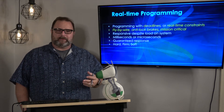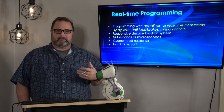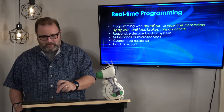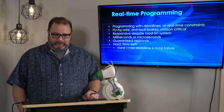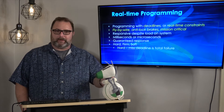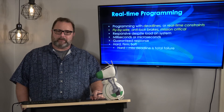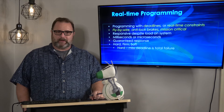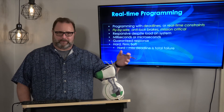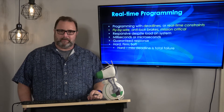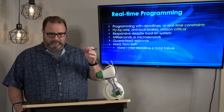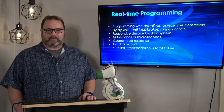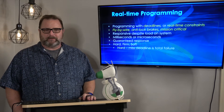There are three categories of what a real-time system can require. A hard system means if you miss a deadline it's total failure — an airplane system, a missile defense system, a safety-of-life system. These must make their deadlines or something catastrophic will happen.